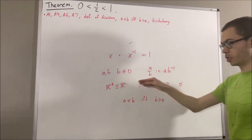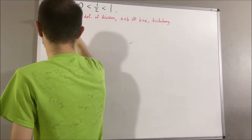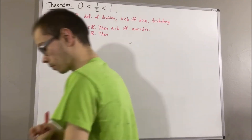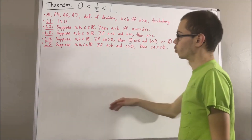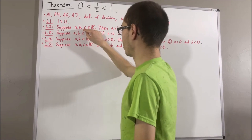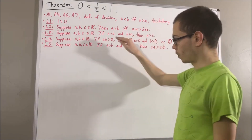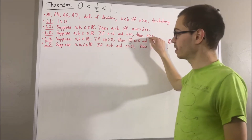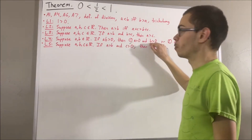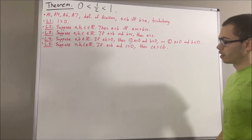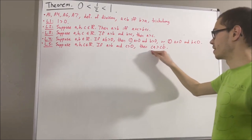We've also proven several other facts regarding the ordering of the real numbers. We have proven: L1 — 1 is greater than 0; L2 — given any three real numbers a, b, and c, a is greater than b if and only if a plus c is greater than b plus c; L3 — if a is greater than b and b is greater than c, then a is greater than c; L4 — if a times b is greater than zero, then either both a and b are greater than zero, or both a and b are less than zero; and L5 — given real numbers a, b, and c, if a is greater than b and c is greater than zero, then c times a is greater than c times b.